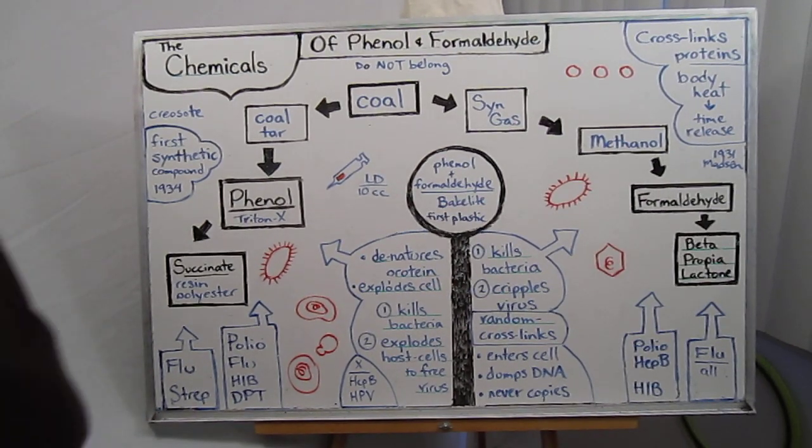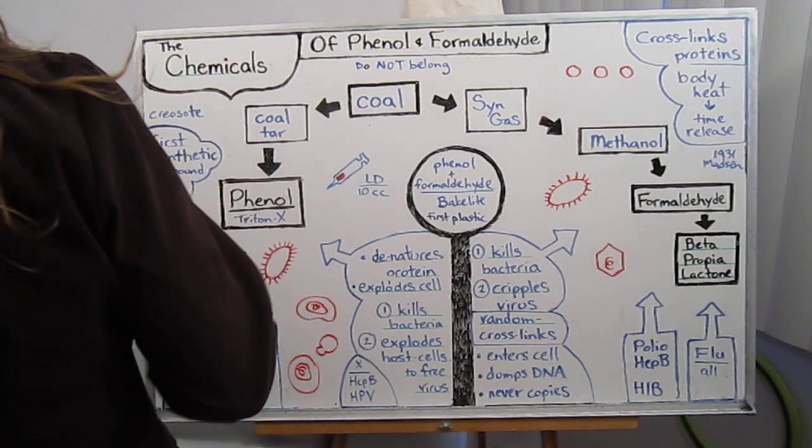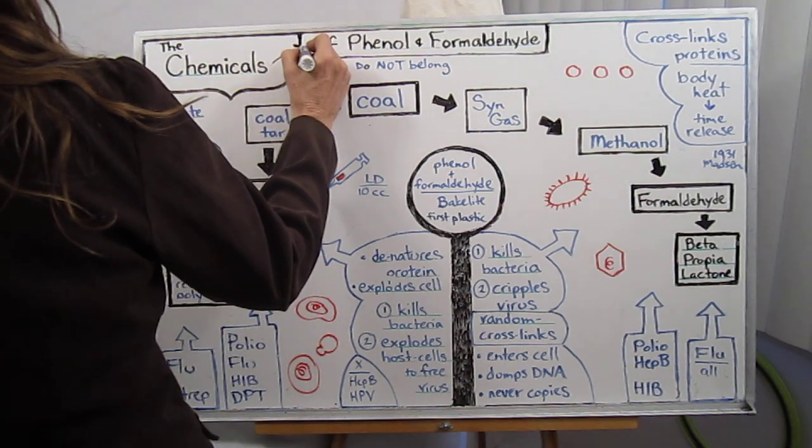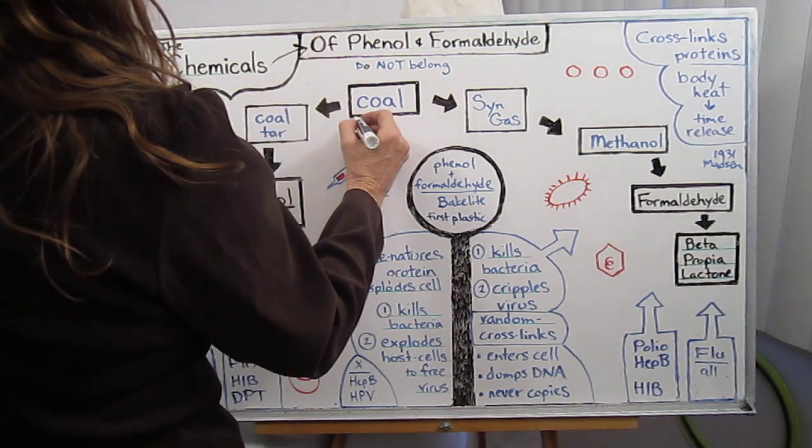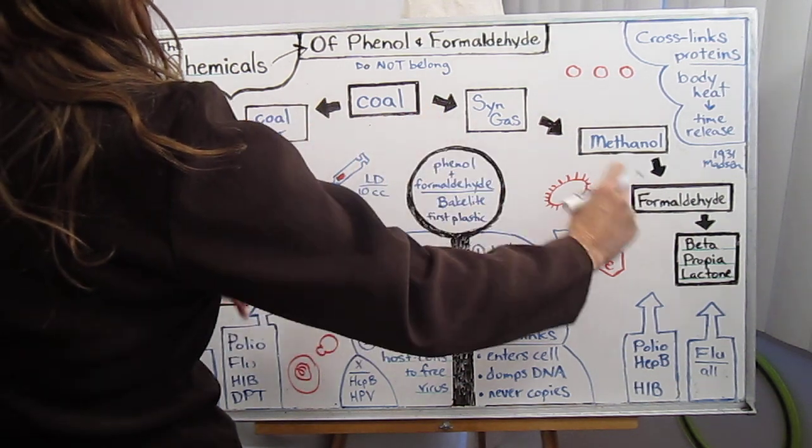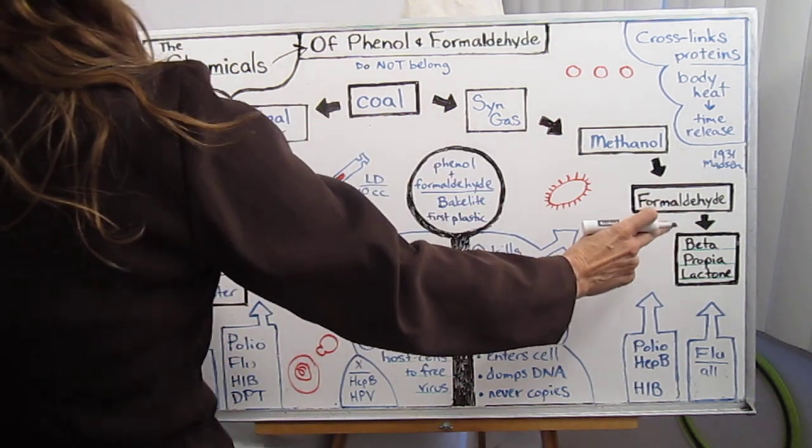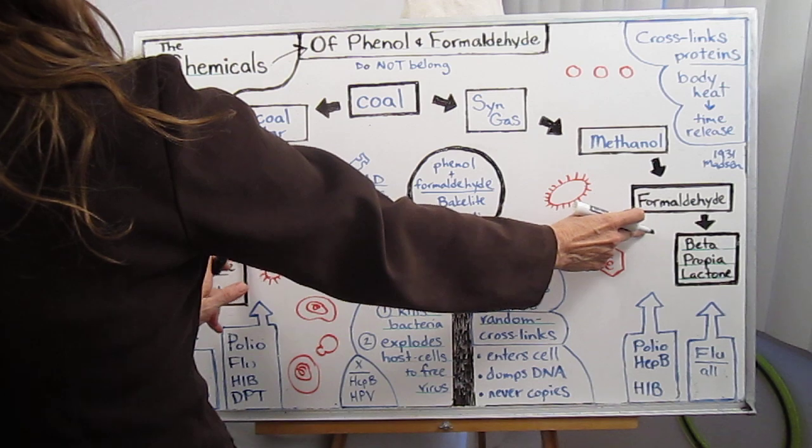The chemicals in vaccines of phenol and formaldehyde. It begins with coal. They've discovered two branches producing phenol and formaldehyde and their derivatives.